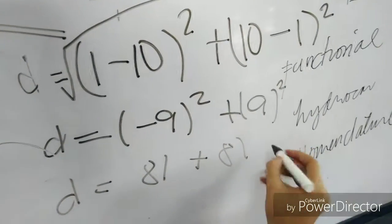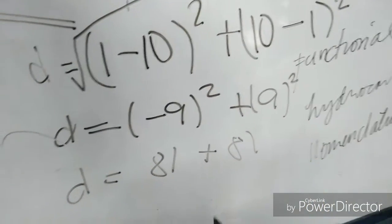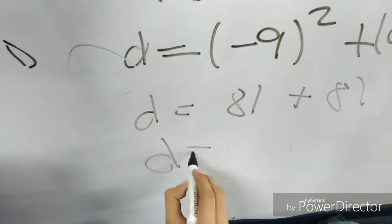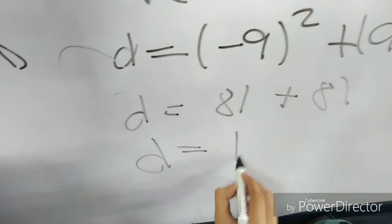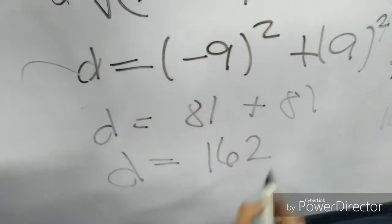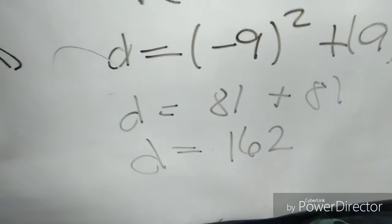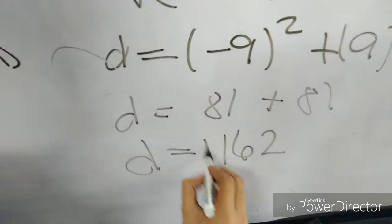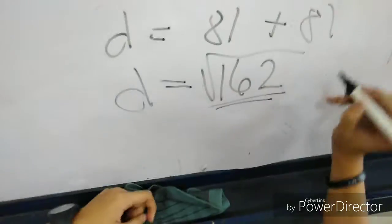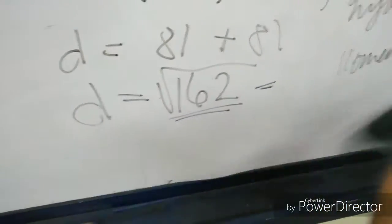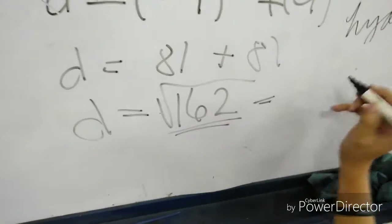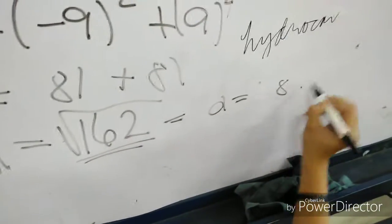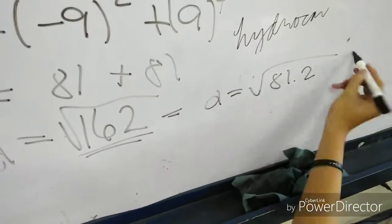We are going to find the square root of 162. Since 162 is not a perfect square, we find its factors: 81 and 2. We get the square root of 81, which is 9, and put 9 outside the square root with 2 remaining inside. So our answer is 9√2.